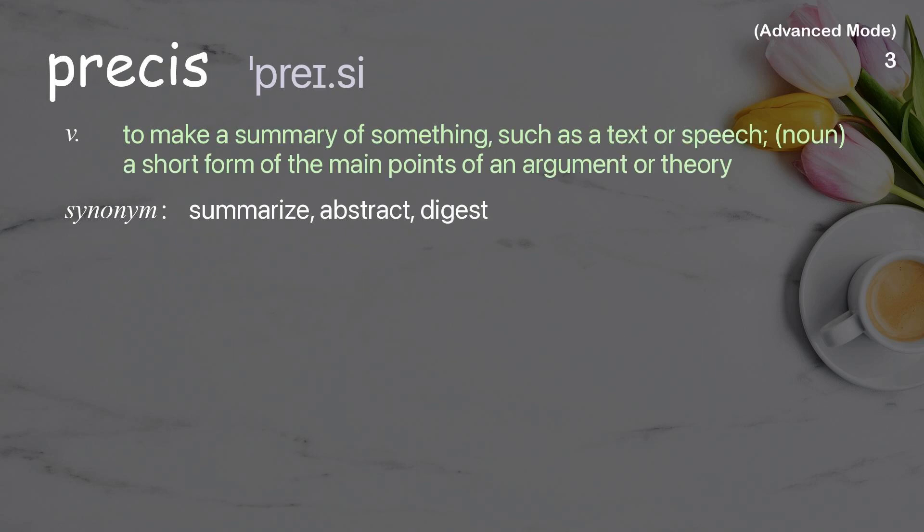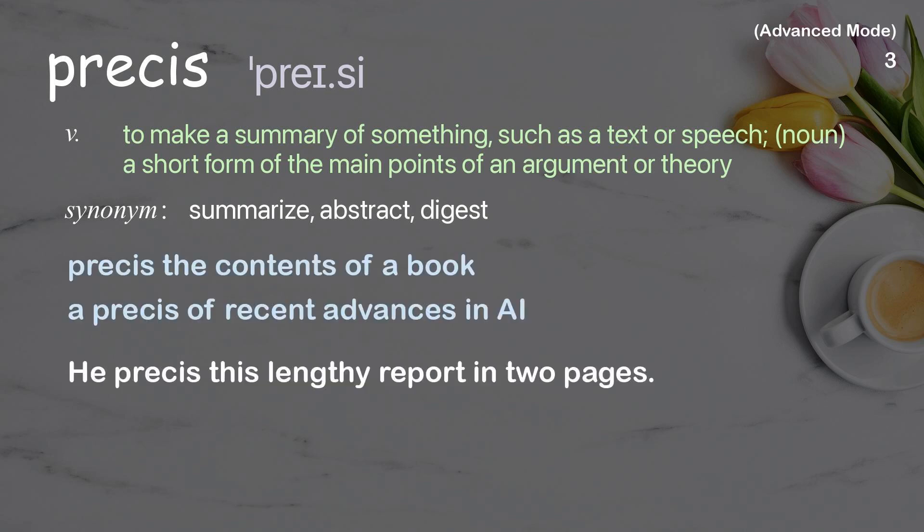Précis: To make a summary of something, such as a text or speech. As a noun, a short form of the main points of an argument or theory. Examples: Précis the contents of a book. Précis of recent advances in AI. Précis this lengthy report in two pages.